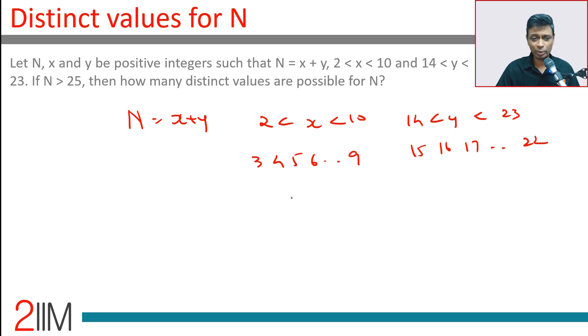Lovely, very simple question. If N is greater than 25, what is the maximum value N can take? 9 plus 22 is 31, so N can be 31. You do 8 plus 22, it can be 30, it can be 29. Every integer less than that is possible, right?